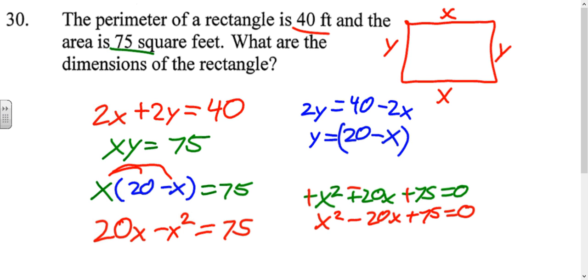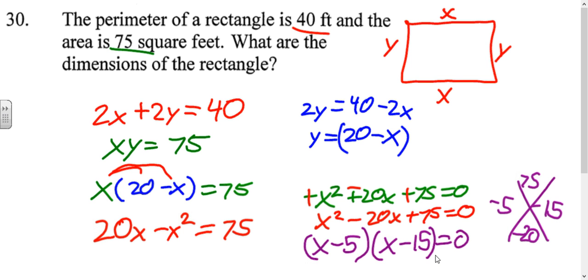In order to solve that, we could try factoring. We need to find two numbers that would multiply to be 75 and add to be negative 20. That would be 15 times 5. And if they're both negative, we would get the negative 20. So our factors are x minus 5 and x minus 15. Solving each of those, we get x equals 5 and x equals 15.